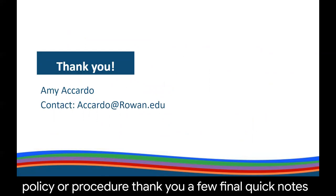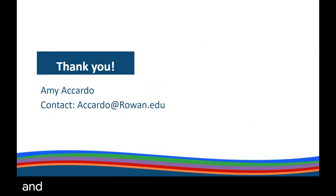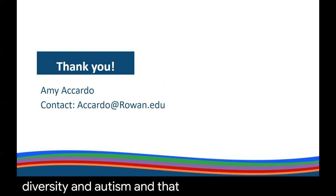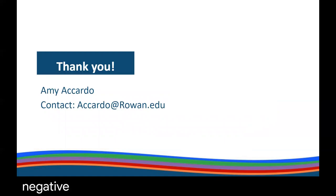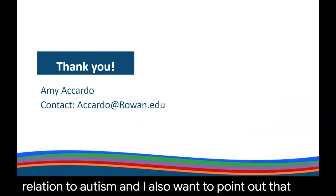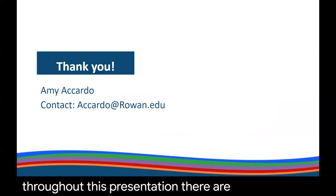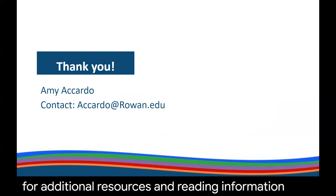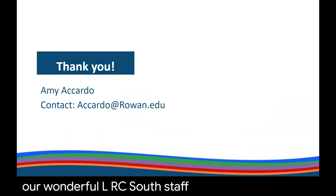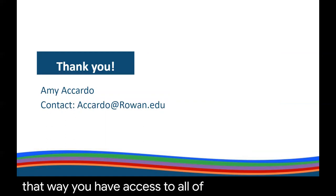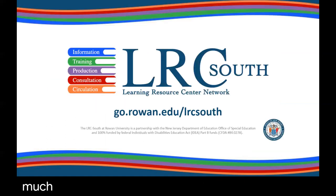A few final notes: throughout several slides you may have noticed a rainbow infinity symbol, which is used to denote neurodiversity and autism. Autistic self-advocates do not embrace the puzzle piece, which has a negative connotation due to discriminatory history related to autism. There are also multiple links on many slides for additional resources and reading. The LRC South staff have uploaded a copy of this presentation to the LRC site, so you can exit the video and pull up the presentation to access all of those links. Thank you so much — hope you enjoyed the short video.